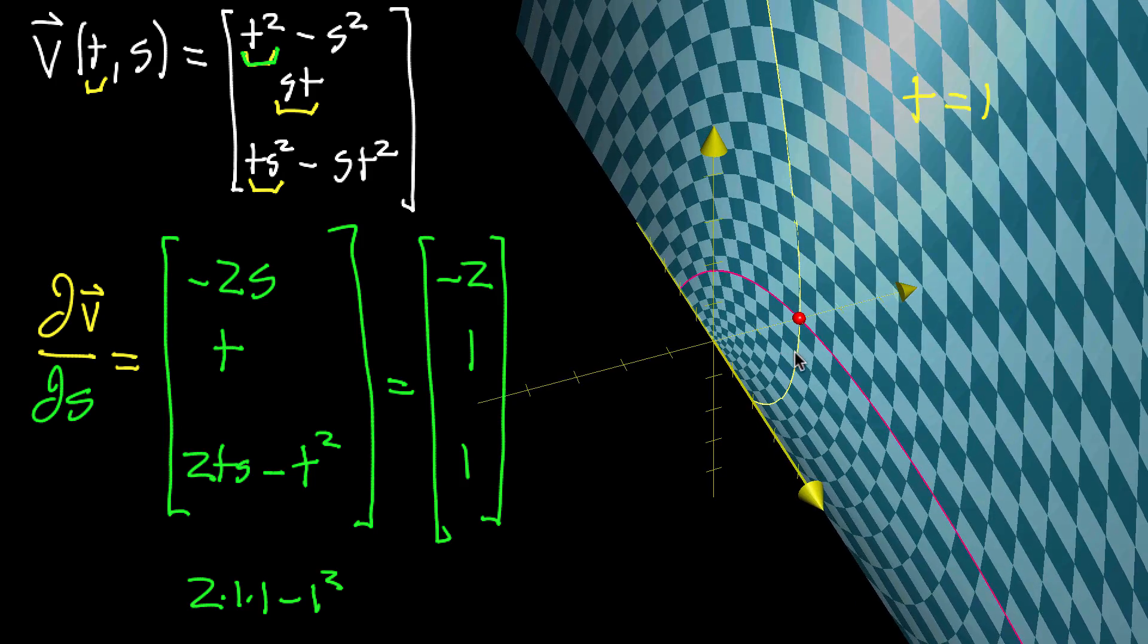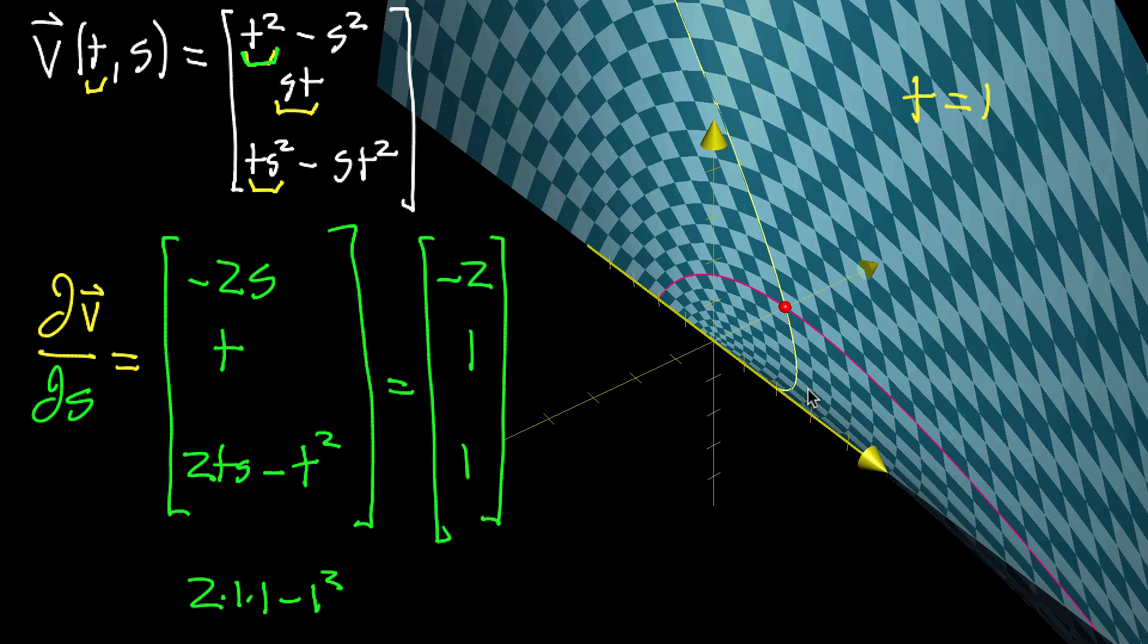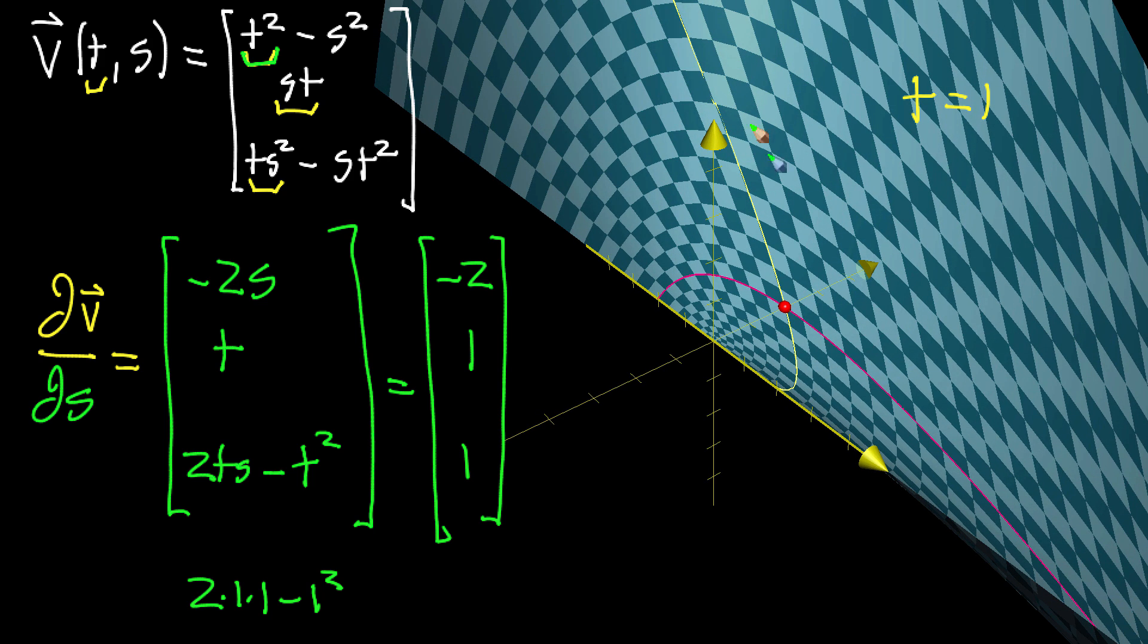One nice thing about this is the two different partial derivative vectors we found - each one is a tangent vector to the surface. The partial derivative with respect to T goes in one direction, and the other gives you a different notion of what a tangent vector on the surface could be. You could have a notion of directional derivative that combines these in various ways, and that'll get you all the different ways to have a vector tangent to the surface.